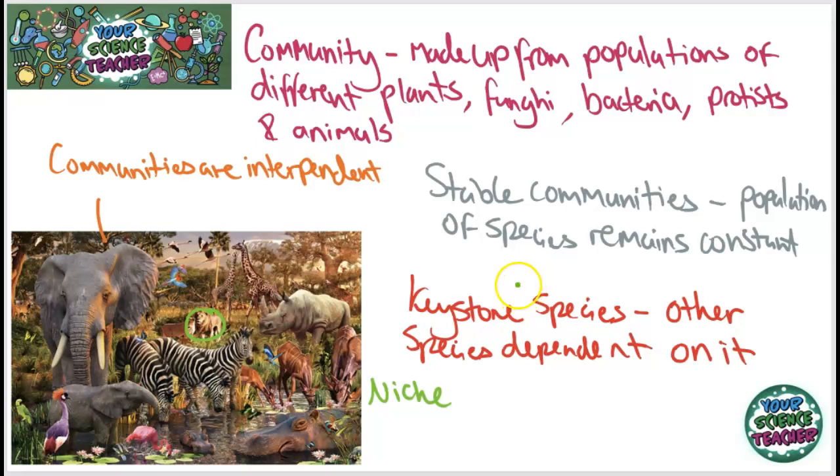For example, if we look at a lion over here, a lion is what we know as a predator and it lives on the ground. Now there can't be too many different species occupying the same niche. This is why you will find that the lion doesn't share its environment with too many other top predators.